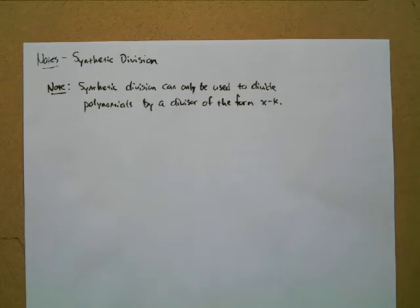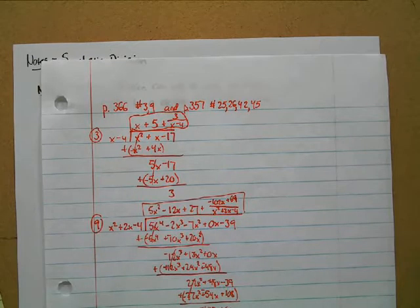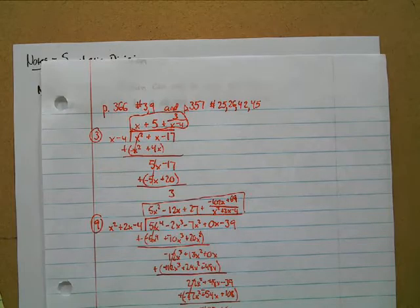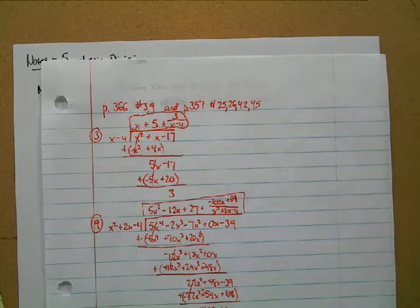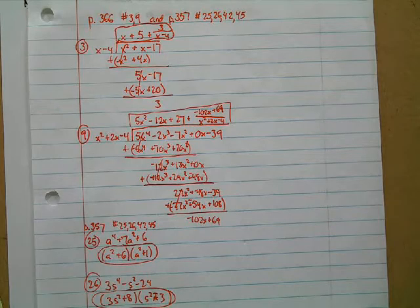For number three on our homework from Friday, could we have used synthetic division? Our divisor was x minus four — that's in the form x minus k, so yes, we could have used synthetic division there. For number nine, the divisor is x squared plus 2x minus 4, which is not of the form x minus k, so you have to use long division for that one.